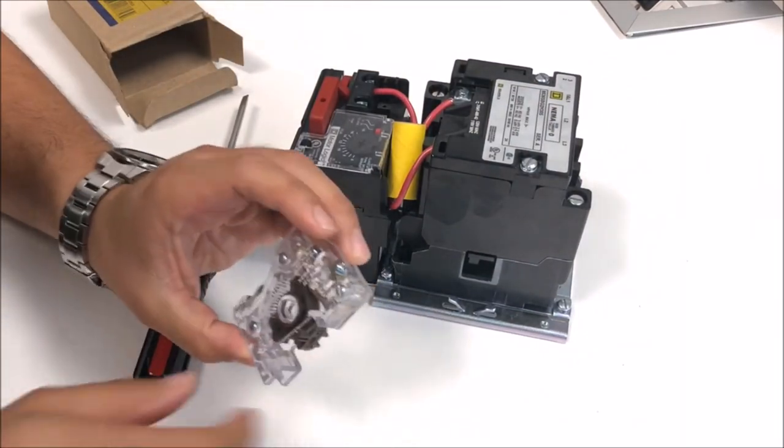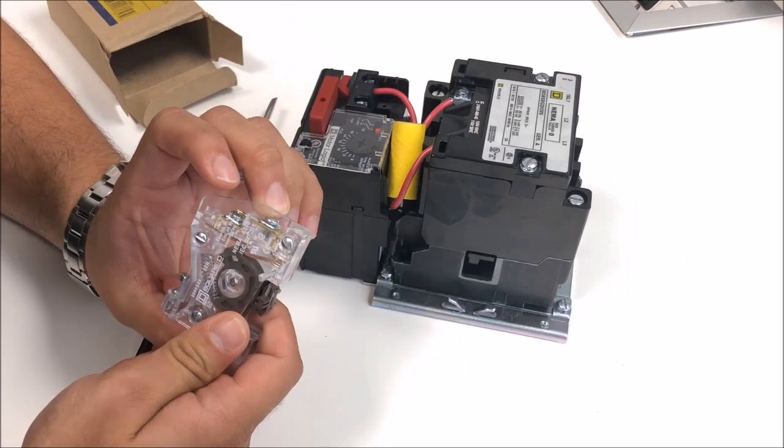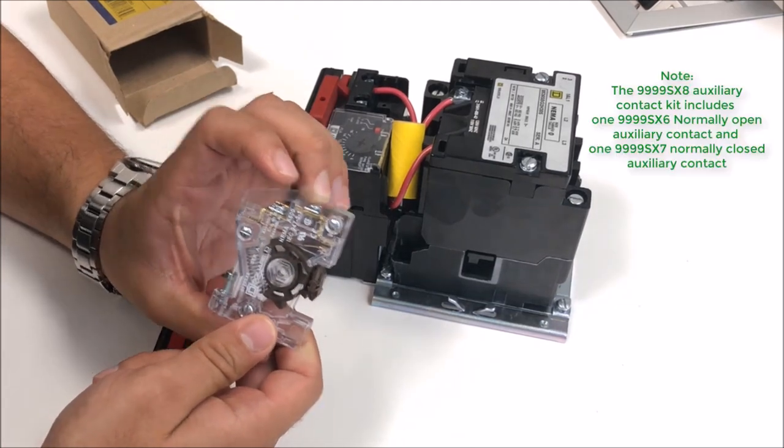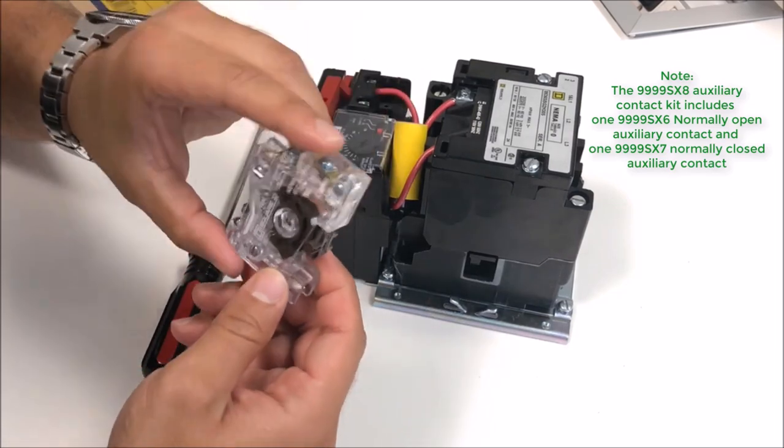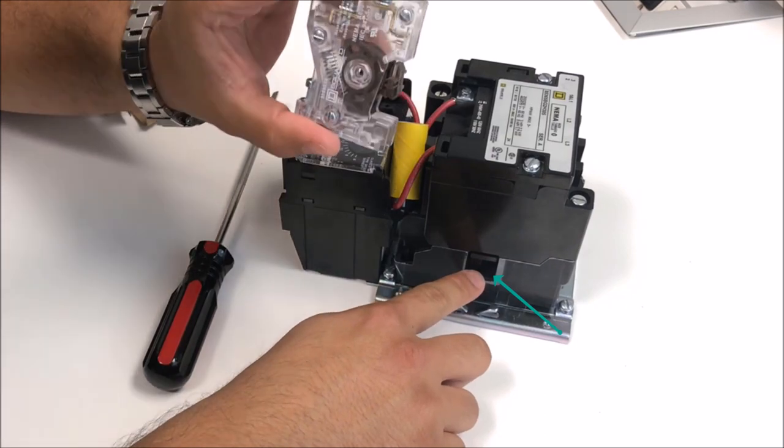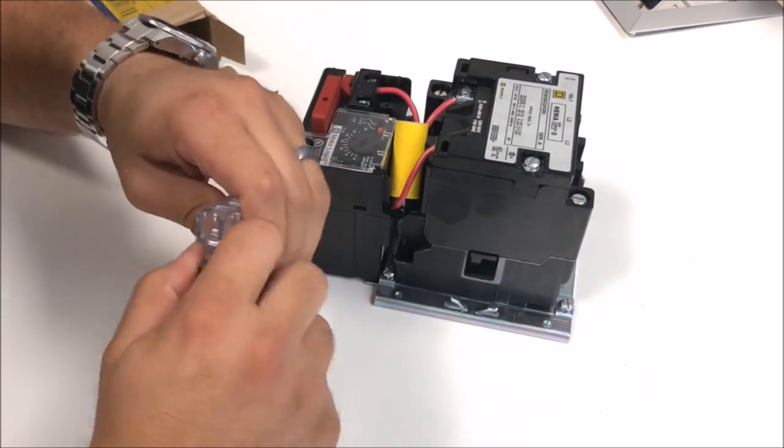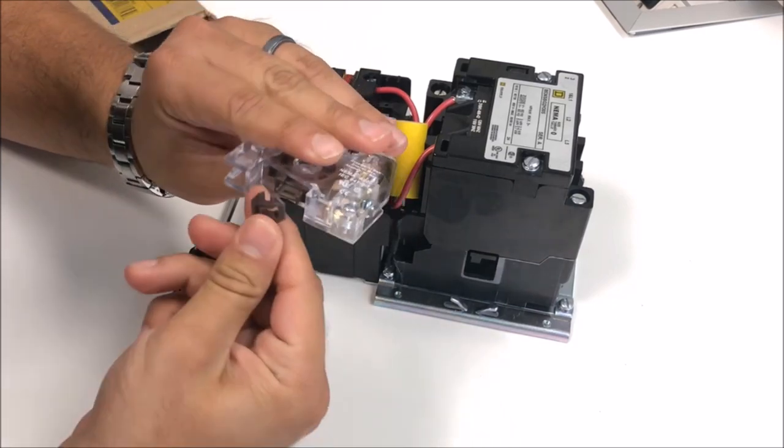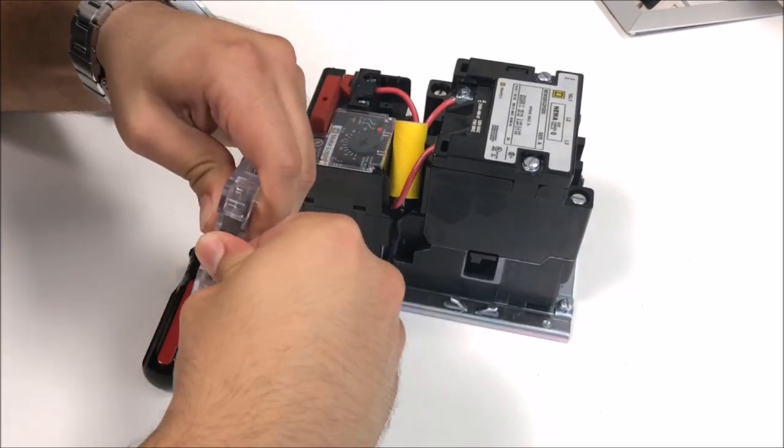Now mount the auxiliary contact. I have a 9999 SX6 here which is a normally open auxiliary contact. These can be mounted on either side of the device. What you're going to do is align this operating lever along with the cavity in the starter itself. These can be removed and positioned in either way to make sure it operates correctly and interlocks with the starter.